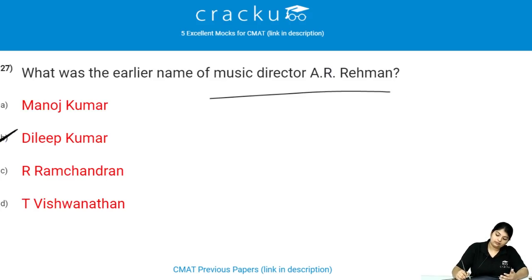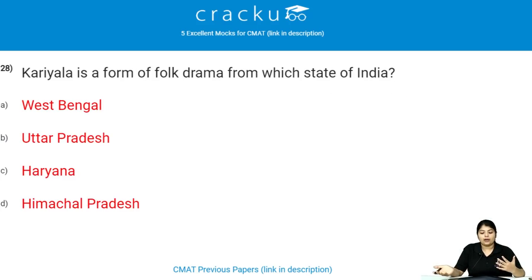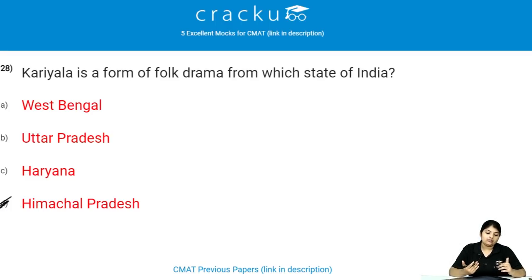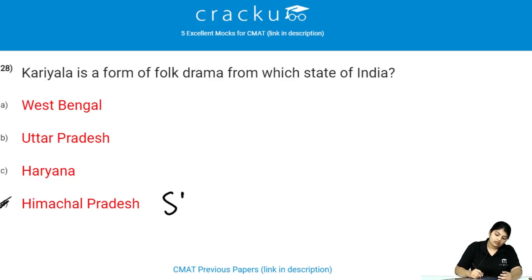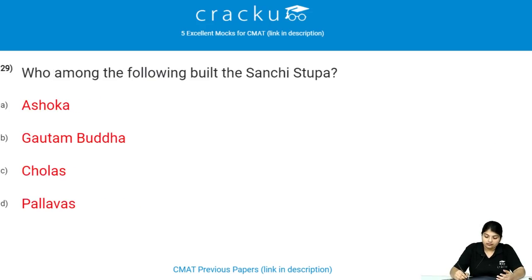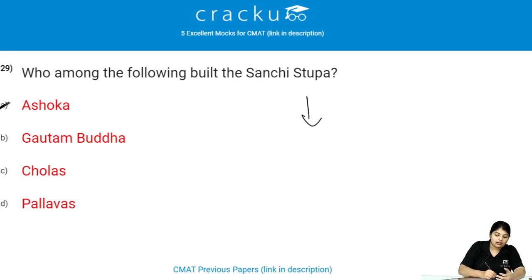Kariyala is a form of folk drama from which state of India? Kariyala is a form of folk drama from Himachal Pradesh. It is more practiced in Shimla, Solan, and Sirmaur districts. Who built Sanchi Stupa? Ashoka built Sanchi Stupa, which is located in Madhya Pradesh.